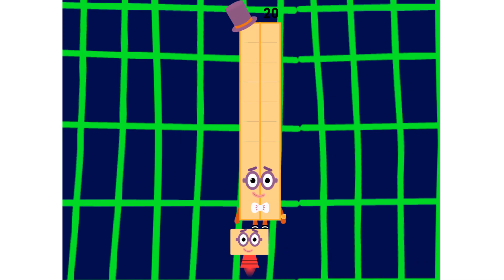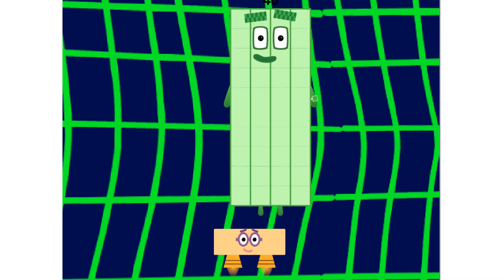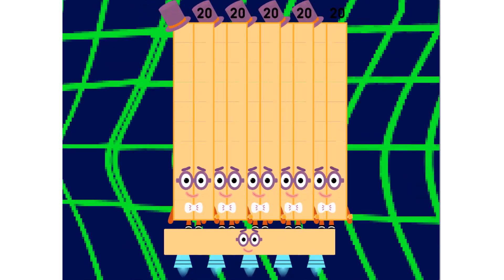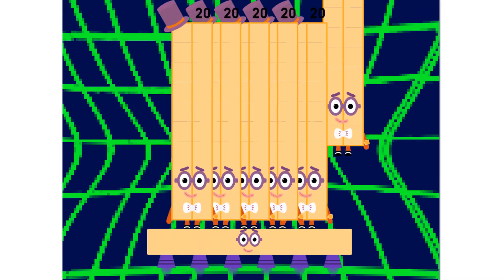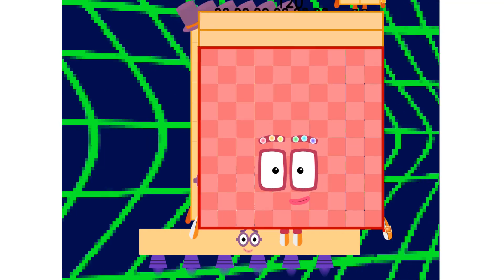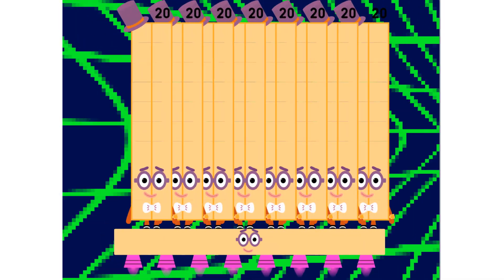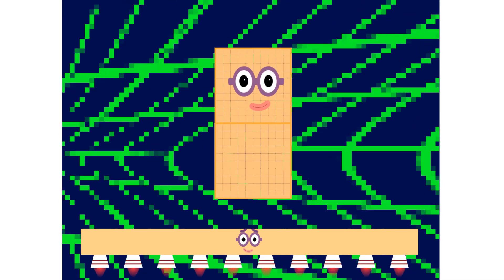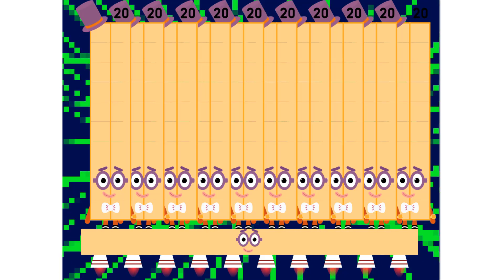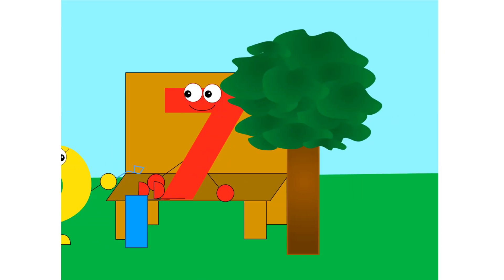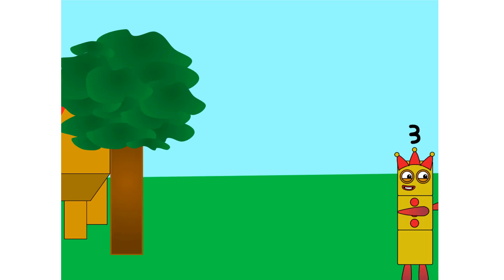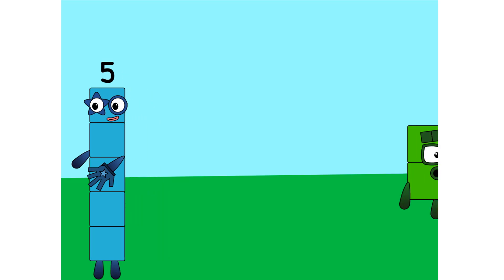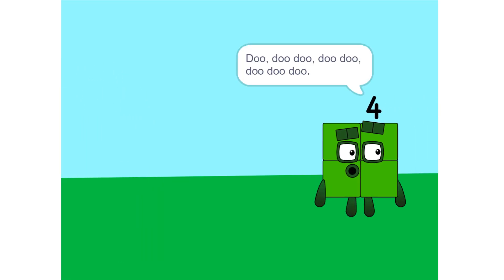1 twenty is 20, 2 twenties are 40, 3 twenties are 60, 4 twenties are 80, 5 twenties are 100, 6 twenties are 120, 7 twenties are 140, 8 twenties are 160, 9 twenties are 180, 10 twenties are 200.